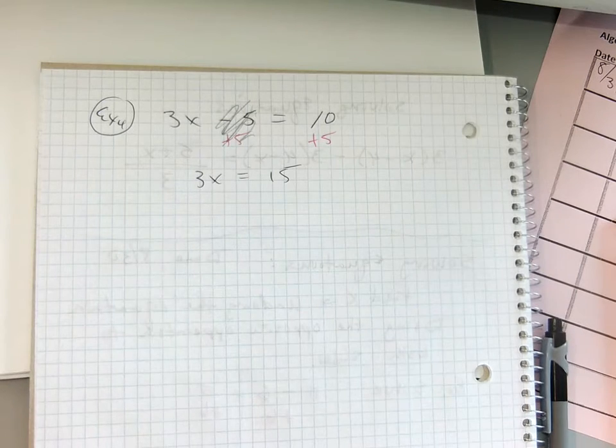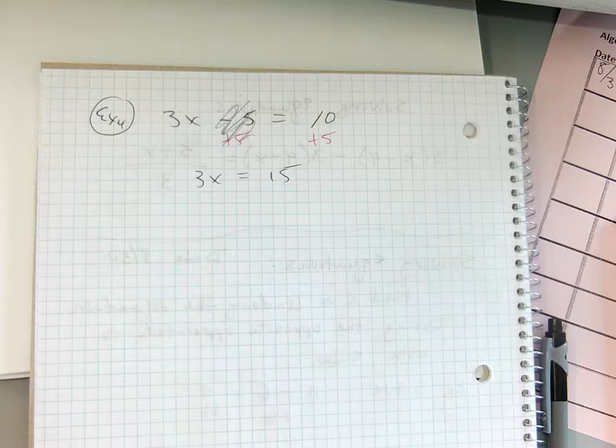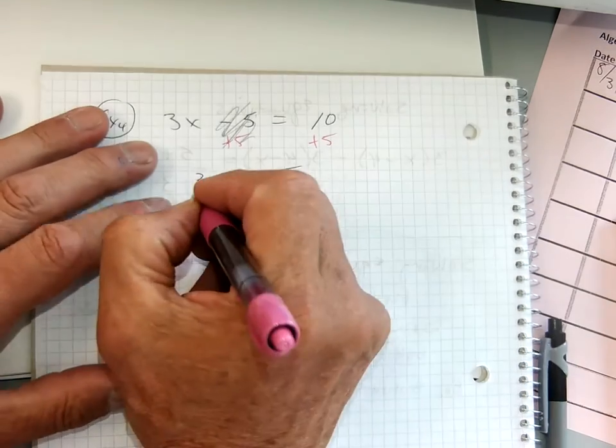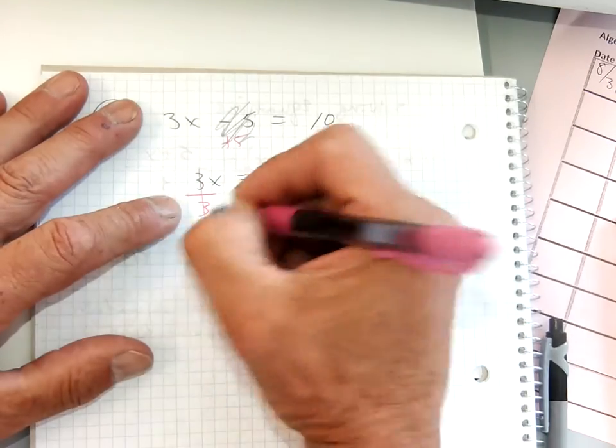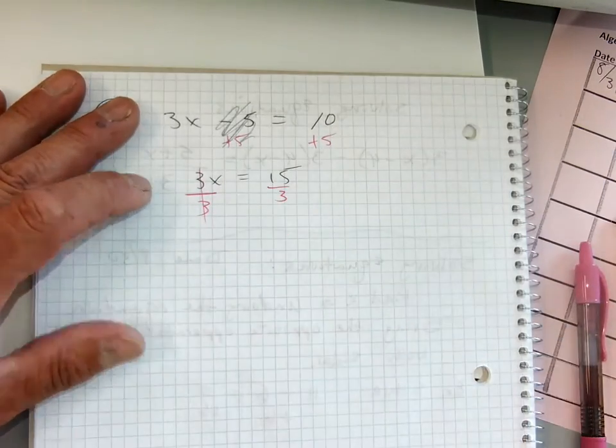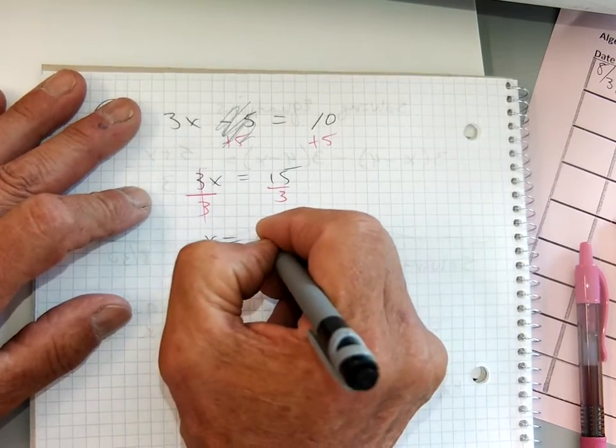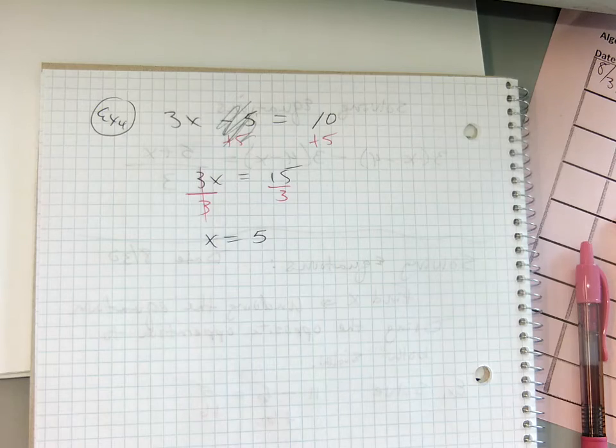So, the 5 is now gone. I have 3x equals 15. 3x means 3 times x, right? What's the opposite of 3 times x? My divide sign looks like that. That's a divide sign. Divide by 3 because it cancels it, right? Divide by 3 on this side and x equals 5. Thumbs up if you got that answer way before me. Good.